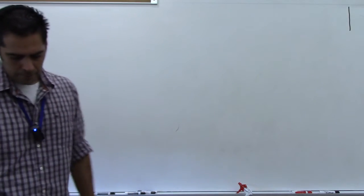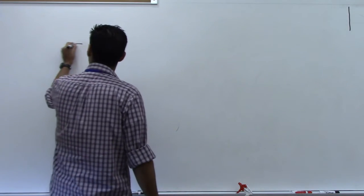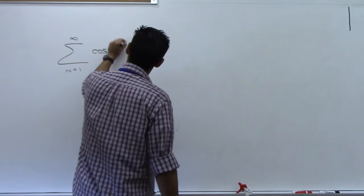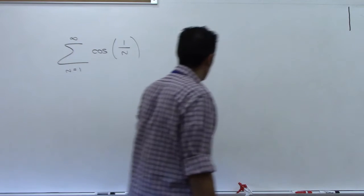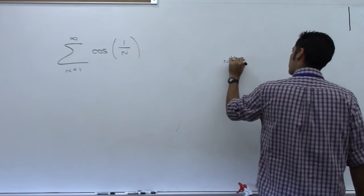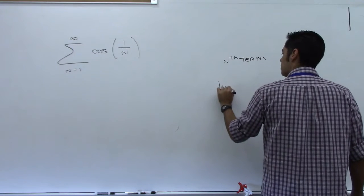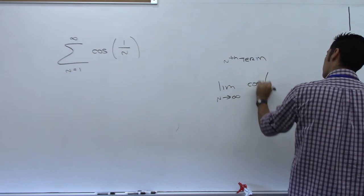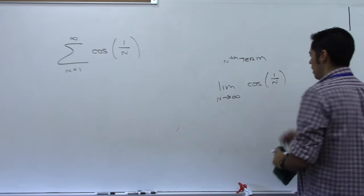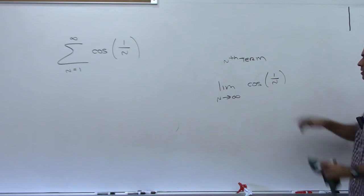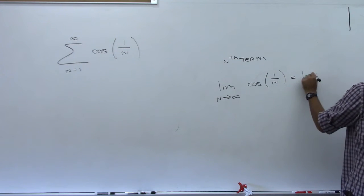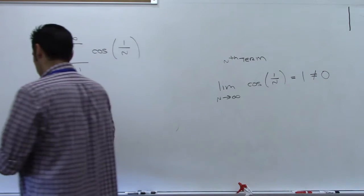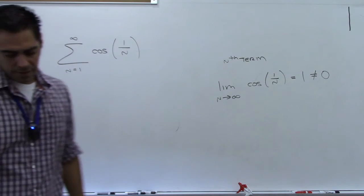Number 18: sum from n=1 to infinity of cosine(1/n). Try the nth term test: the limit as n goes to infinity of cos(1/n). As n goes to infinity, 1/n goes to 0, and cosine of 0 is 1 — which is not zero. Therefore this diverges. Simple one with the nth term test.